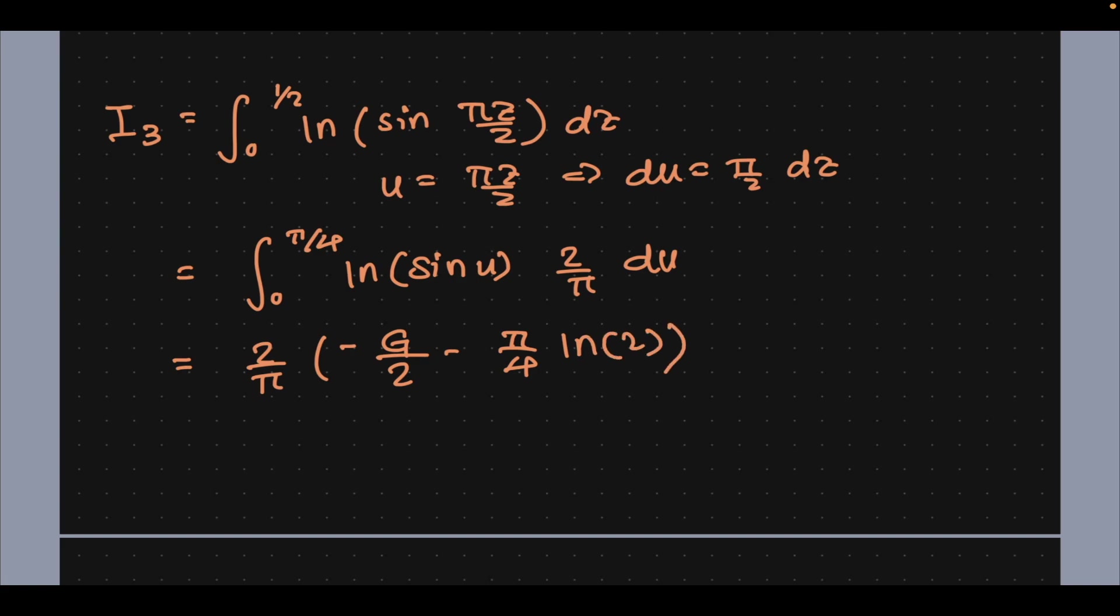Which we can nicely simplify to be minus Catalan's constant over π minus natural log of 2 divided by 2.